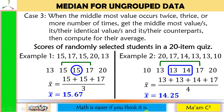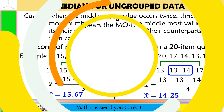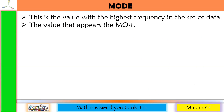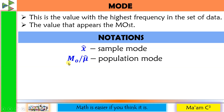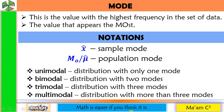The last measure of central tendency is the mode — the value with the highest frequency in the set of data, meaning the value that appears the most. The notation for sample mode is a small letter x with a hat on top. For population mode, we use M-sub-O or mu with a hat. There are four types: unimodal distribution with only 1 mode, bimodal with 2 modes, trimodal with 3 modes, and multimodal with more than 3 modes.